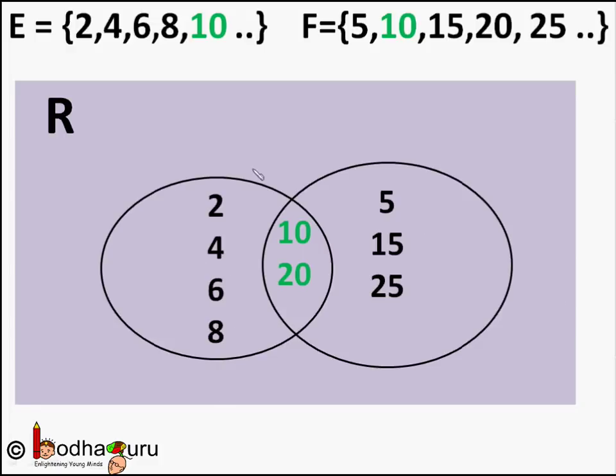And the leftover part of the left circle represents the rest of the even numbers but not multiples of 5. This includes numbers like 2, 4, 6, 8, 12, 14 and so on.